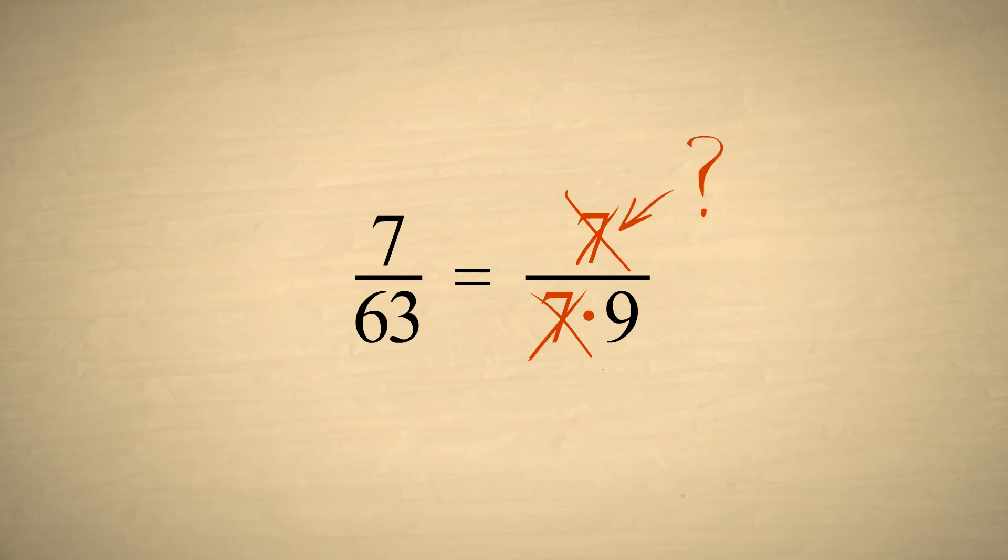But what about the top? Since seven is the same as seven times one, when we cancel out the sevens, we are left with one-ninth.